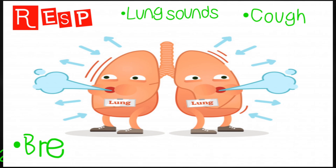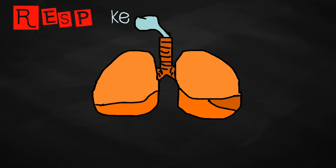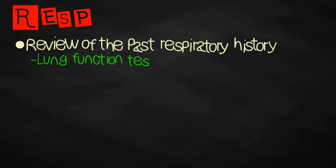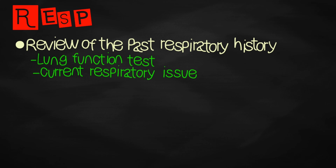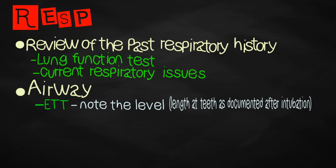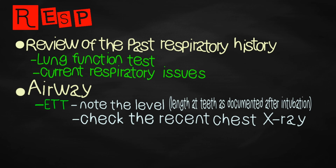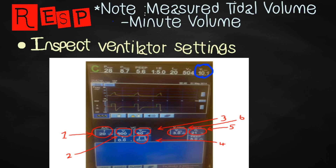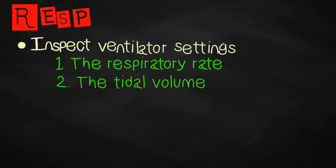Moving on to the respiratory system — key points in doing respiratory assessment in ICU patients include noting past medical history of respiratory disease including lung function tests. Examine the patient's airway and respiratory system. If an endotracheal tube is in place, note the length at the teeth as documented at insertion and check its position on the most recent chest X-ray. Auscultate the chest anteriorly and in the axilla. Inspect ventilator settings and note measured tidal volume, minute volume, peak, and plateau pressures.